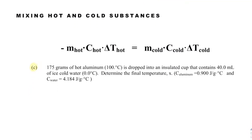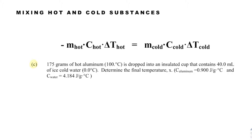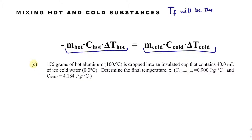One equation we may also see is: −MC delta T = MC delta T. This applies when you mix a hot and cold substance — they will eventually reach the same final temperature. The negative sign on the hot substance's side shows the process is exothermic for it, while the cold substance's side is positive because it is endothermic.